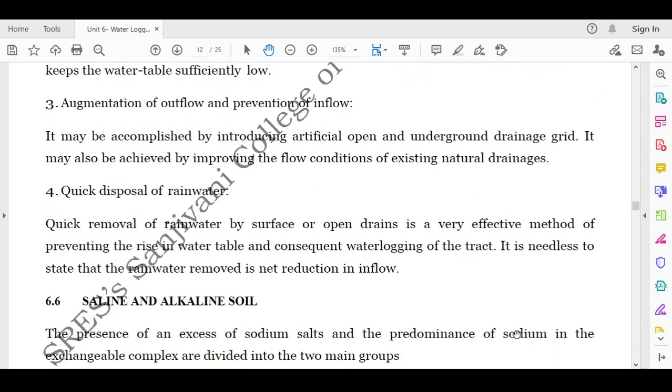Then augmentation of outflow and prevention of inflow. It may be accomplished by introducing artificial open and underground drainage grid. It may also be achieved by improving the flow conditions of the existing natural drainage. So you have to avoid the excess inflow and you have to make sure that the outflow is drained properly.